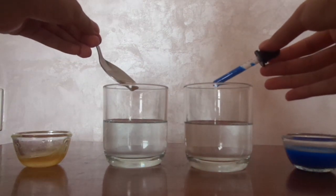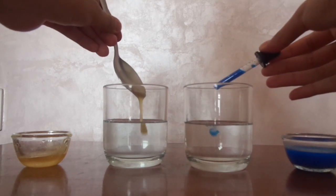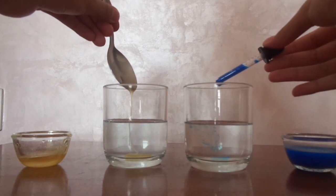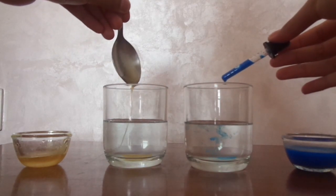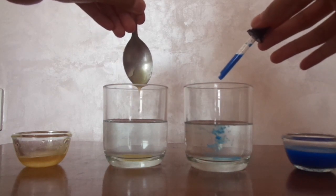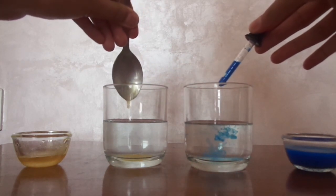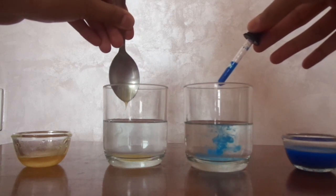Now you can add more of the honey and the ink but just make sure that you're adding equal quantities of both for a good comparison. As you can see the ink is already mixing in with the water whereas the honey is just going and settling at the bottom.